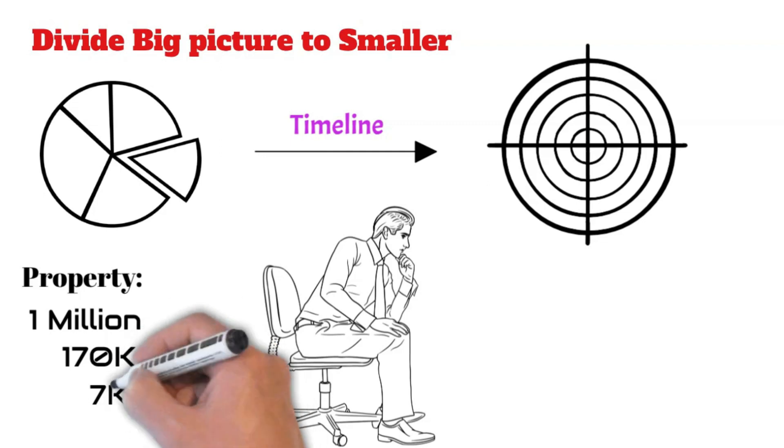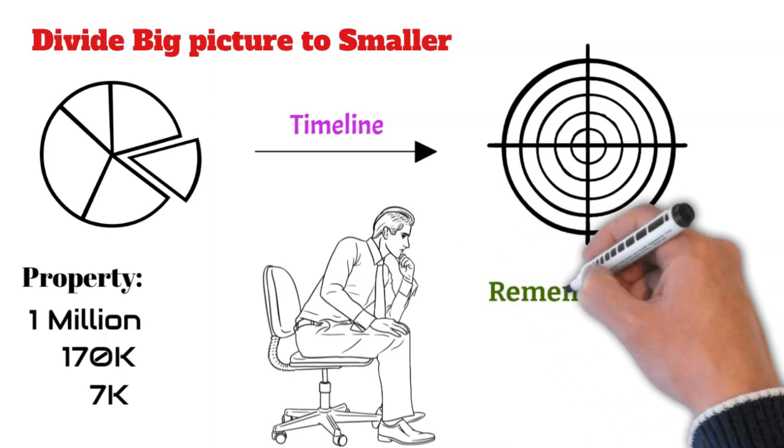So in every month we have to earn an approximate amount of 7,000. See, you understand now how to divide your goals. Whatever goals that you may have, there is always a smaller part that you need to achieve first. Remember, you cannot make a hundred dollars if you don't have a single penny.